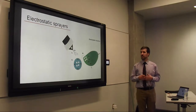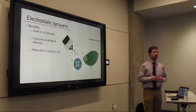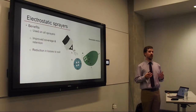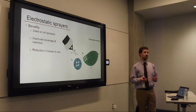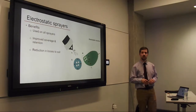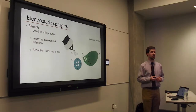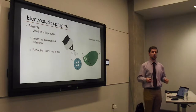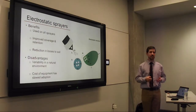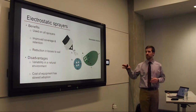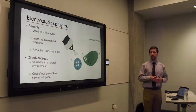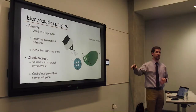Electrostatic sprayers charge particles either positive or negative depending on the current. These droplets become polarized and are attracted to grounded objects like soybean leaves, preventing losses to soil attachment, drift, and evaporation. Benefits include that they can be attached to all sprayers — traditional, air-assisted, and even hand booms — and you do see better retention. The disadvantage is inconsistency in the field; these are typically better for controlled environments like spray chambers or greenhouses. Additionally, on a large 120-foot boom, outfitting all nozzles can be costly.